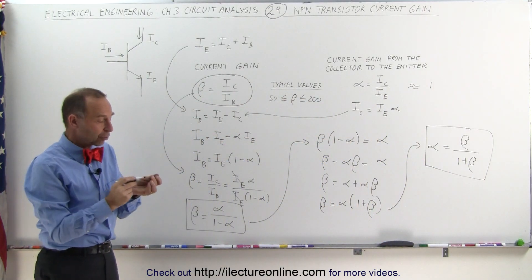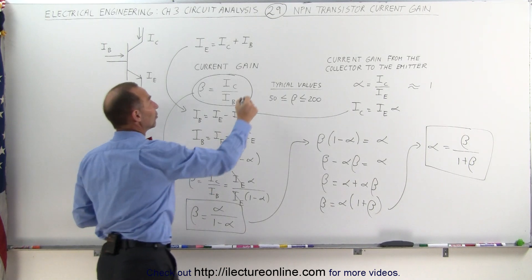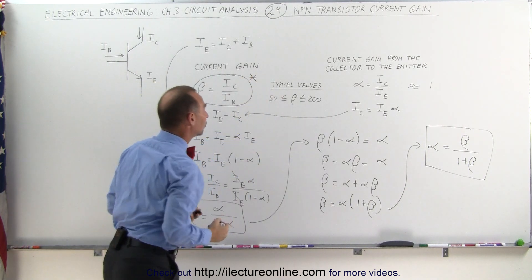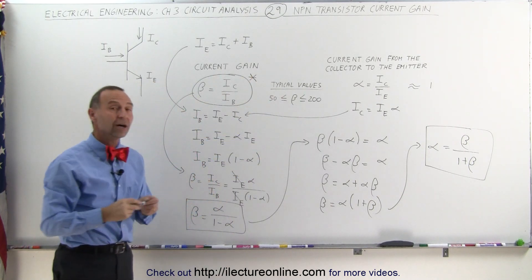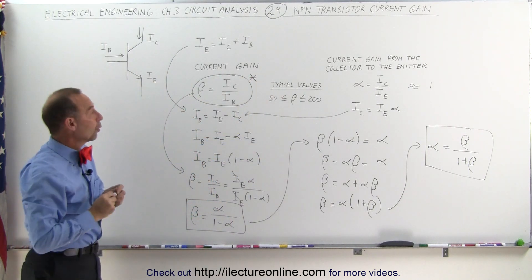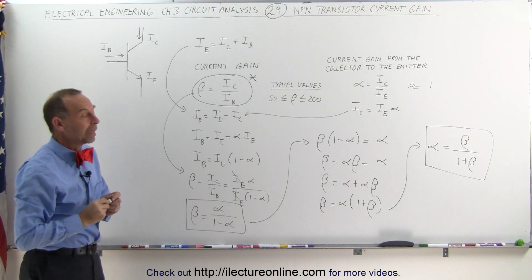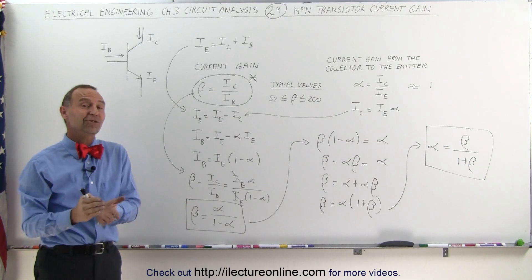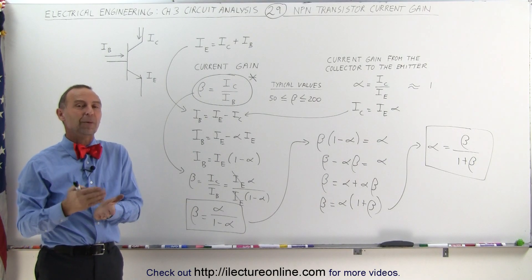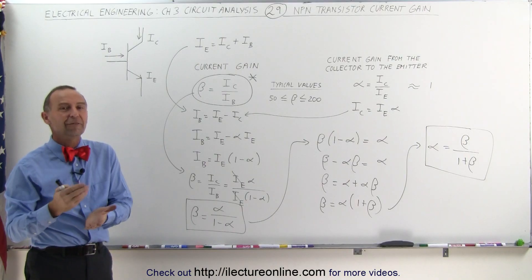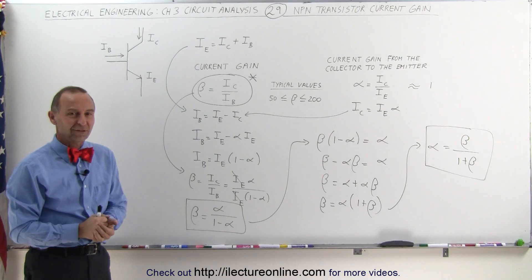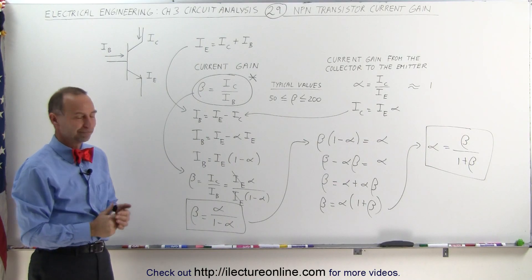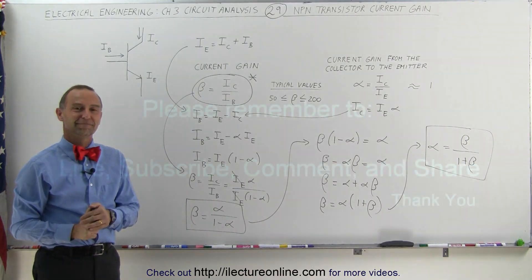Those are the two different kinds of current gains. The one we typically talk about is the current gain of the collector relative to the base — beta. Now we have a better understanding of what we mean by the current gain of an NPN transistor.